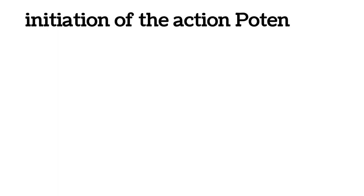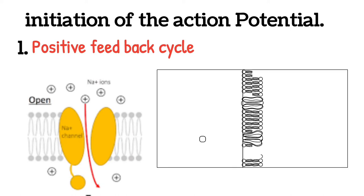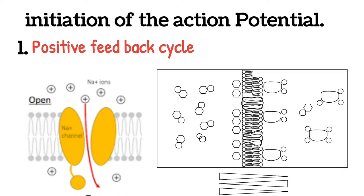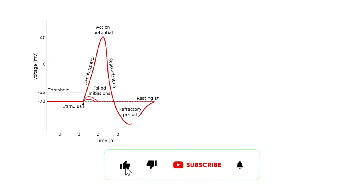Initiation of the action potential: positive feedback cycle opens the sodium channels. First, as long as the membrane of the nerve fiber remains undisturbed, no action potential occurs in the normal nerve. However, if any event causes enough initial rise in the membrane potential from minus 70 millivolts toward the zero level, the rising voltage will cause many voltage-gated sodium channels to begin opening.